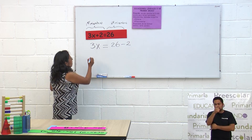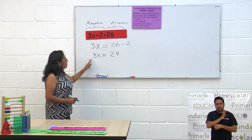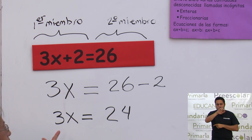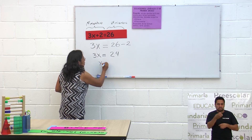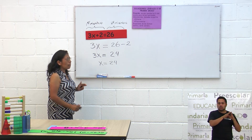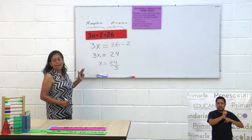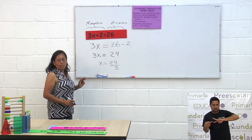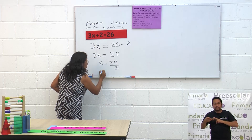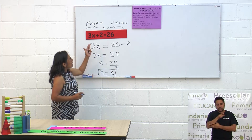3X igual a 26 menos 2, que es 24. Aquí tenemos 3X igual a 24. Vamos a despejar la X — dejar solita la X para encontrarle su valor. Ponemos X igual a 24; este 3 está multiplicando. ¿Cómo va a pasar del otro lado? Va a pasar dividiendo. Recordemos que la multiplicación es la operación directa y la división es la operación inversa. X igual a 24 entre 3, que es 8. Este es el valor de X de esta primera ecuación.